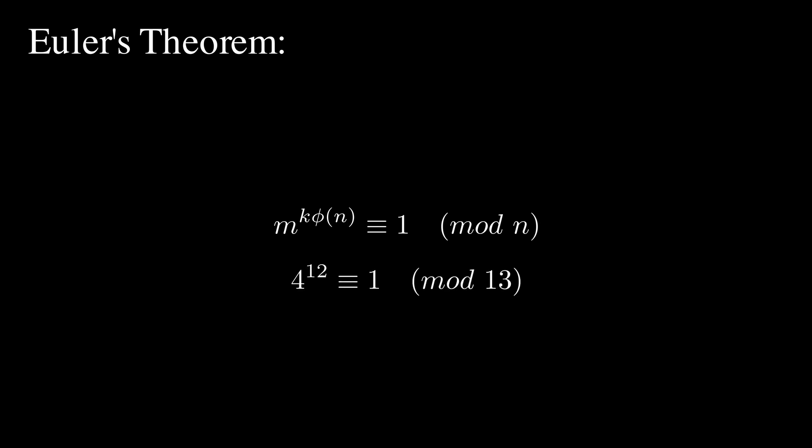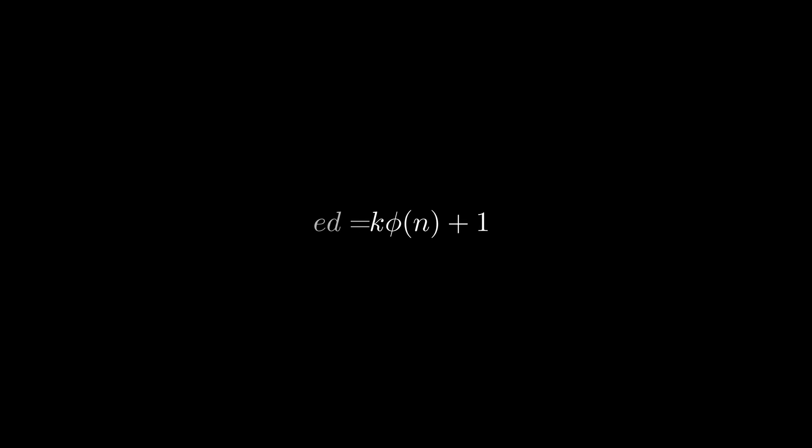From the previous example, 4 to the power 12 mod 13 is 1. The power 24 also works, and so does 36. If we multiply both sides by m, we add 1 to the exponent on the left using our basic exponent rules, and the right side just becomes m. This is our special number that will give back m for a number n. Isolating these numbers to their own equation, we define e times d to be equal to this exponent.